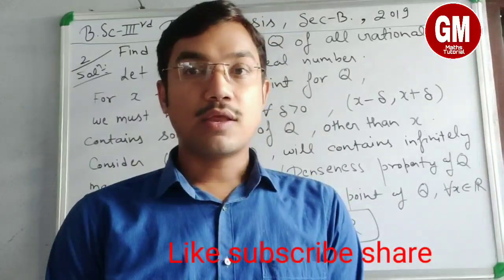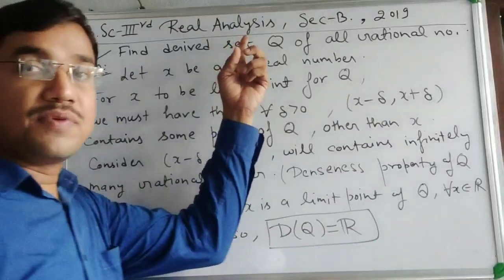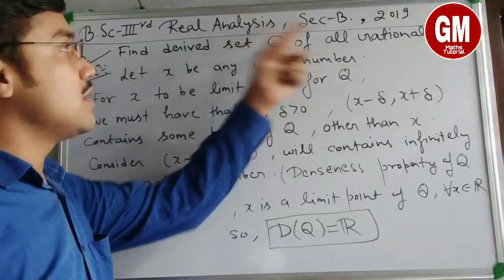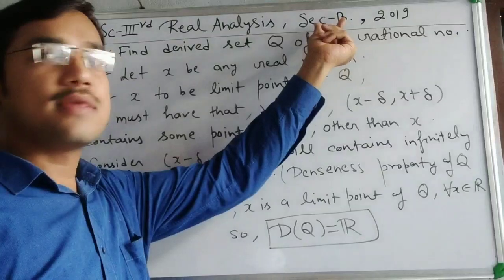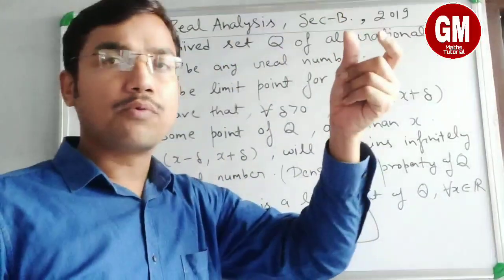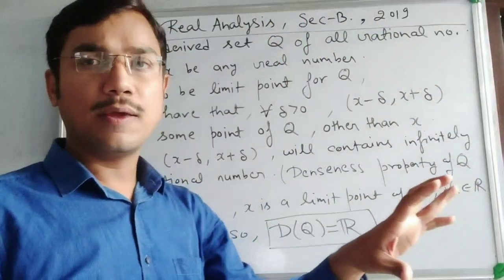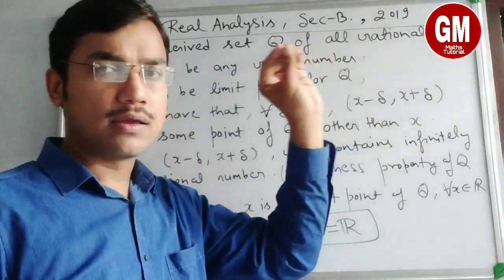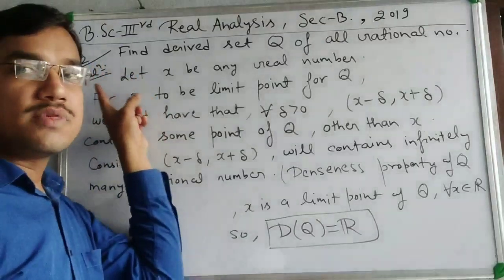Let's see what we are watching today. This is the first paper of BSE third year — the 2019 Analysis paper. I have added Section A. I am going to do Section B first, because Section A has mostly definitions. So let's look at Question 2: Find the derived set of Q — the set of all rational numbers.